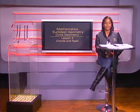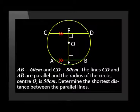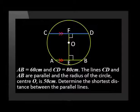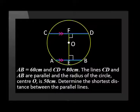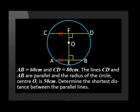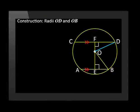We will now look at an example where this theorem is applied. In the diagram, AB equals 60 cm and CD equals 80 cm. The lines CD and AB are parallel and the radius of the circle center O is 50 cm. Determine the shortest distance between the parallel lines. To do this, we will first need to put in some construction lines — lines that we add to the diagram to make it possible to determine the distance between the parallel lines. We construct the radii OD and OB.